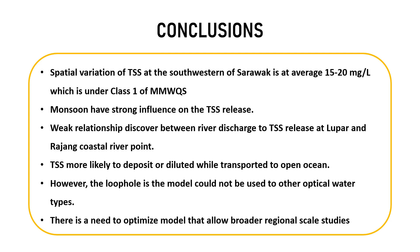To recap, the key points are: average TSS value is still within Class 1 at southwestern Sarawak; monsoon shows strong influence on TSS release; river discharge is weakly related to TSS concentration at Lupa and Rajang Mesin; and TSS is more likely to deposit or be diluted while transported to the open ocean. However, the model developed still has limitations and cannot be applied to all water types, and needs to be optimized. That is all, thank you.